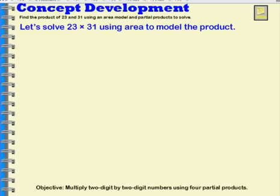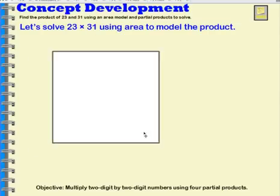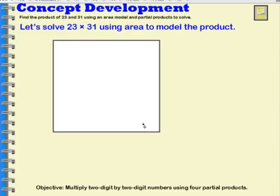So let's solve 23 times 31 using area to model the product. We're going to use the area model to help us find the product of 23 times 31. Here's the rectangle we're going to use.